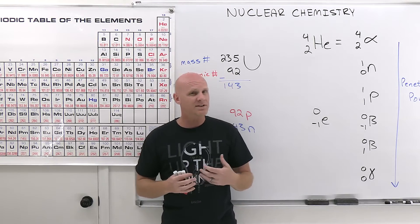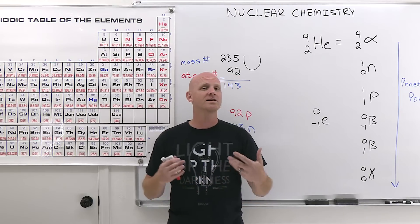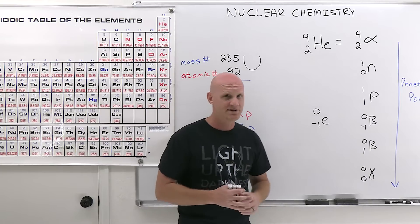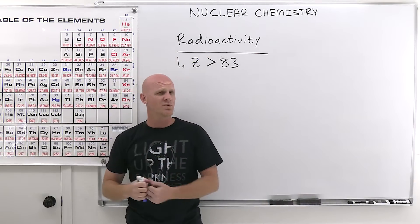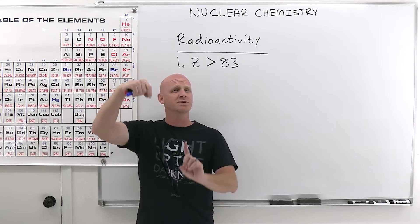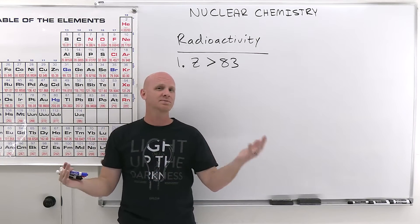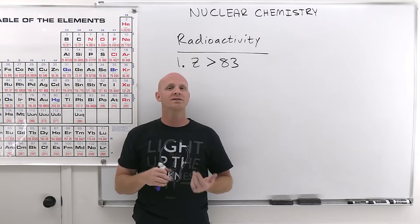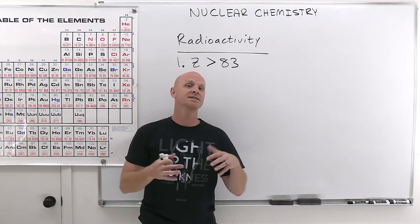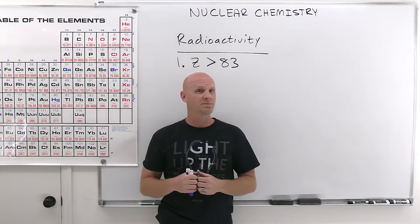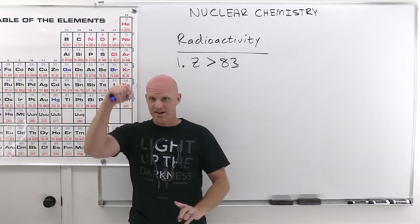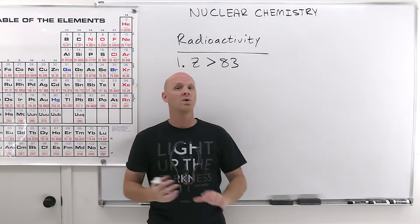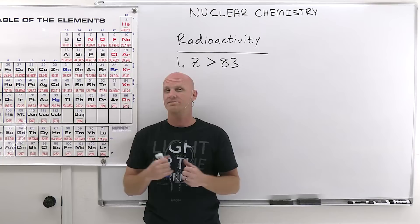We now need to talk about some trends in radioactivity and how you identify whether you'd expect an element to be more or less likely to be radioactive. There's an inverse relationship between radioactivity and stability: a relatively stable nucleus is not expected to be radioactive, while a relatively unstable nucleus is more likely to undergo radioactive decay.